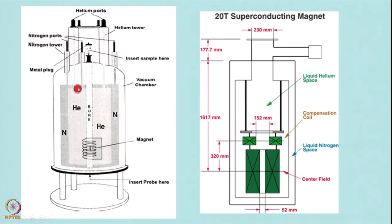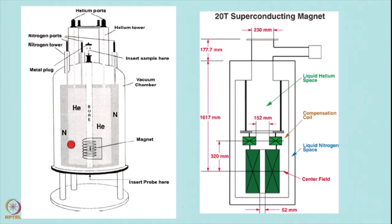There is a hole in the middle — a bore — in the interesting design of the magnet. The sample sits in the white bore at room temperature, while it is surrounded by the superconducting coil at liquid helium temperature. Other accessories required to maintain the coils, evaporators, and measurements are also included. So the sample remains at room temperature inside the bore.